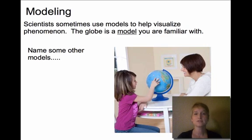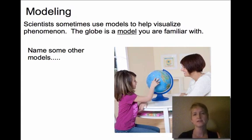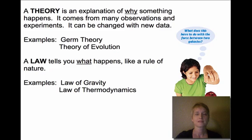Scientists sometimes use models to help visualize things that are going on. Think about the globe — if you're trying to find a city on Earth or visualize where it is in relation to where you are, a globe is a great model to use. A theory is why something happens, and it has to come from many observations and many experiments. It can change over time with new data, but a theory is always based on a lot of experiments — for example, germ theory and the theory of evolution.